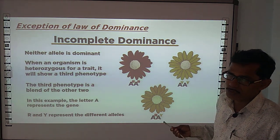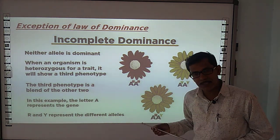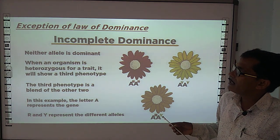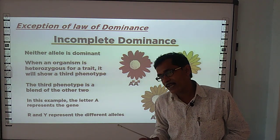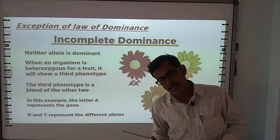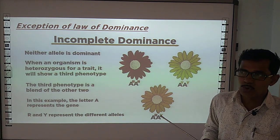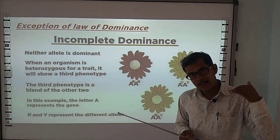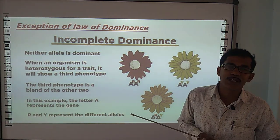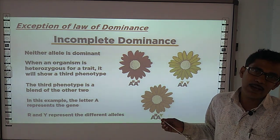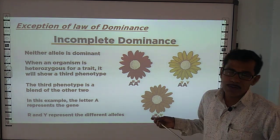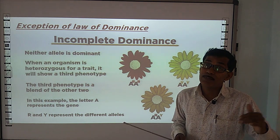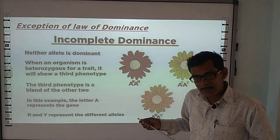However, Mendel had some exceptions. The Law of Dominance has the exception of incomplete dominance. Mendel stated that characters are either recessive or dominant. In the F1 generation, the dominant character is expressed, while the recessive character is passed on and shown in the F2 generation.